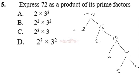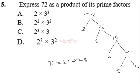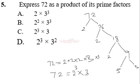All those are the prime factors, so to express 72 as a product of prime factors we write: 72 = 2 × 2 × 2 × 3 × 3, which equals 2³ × 3². The correct answer is D.